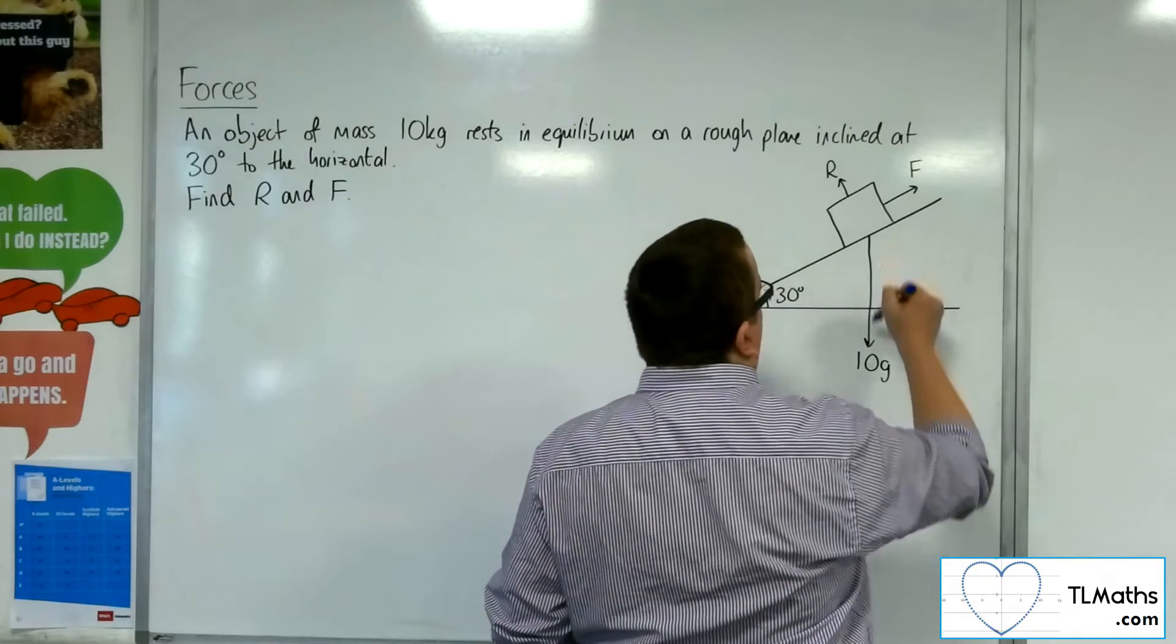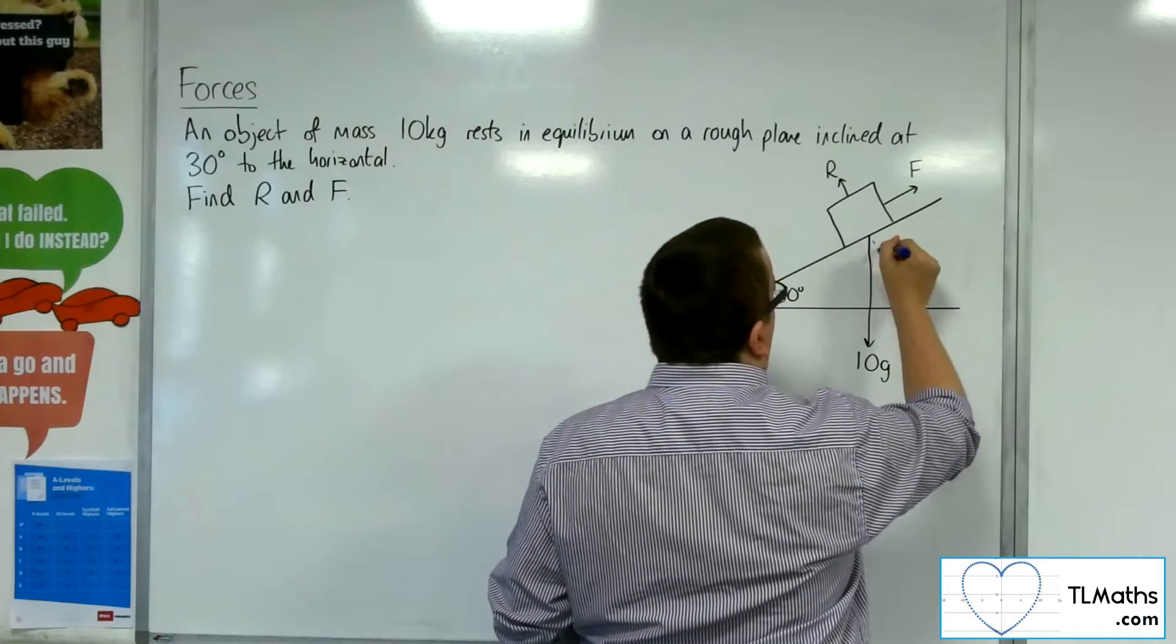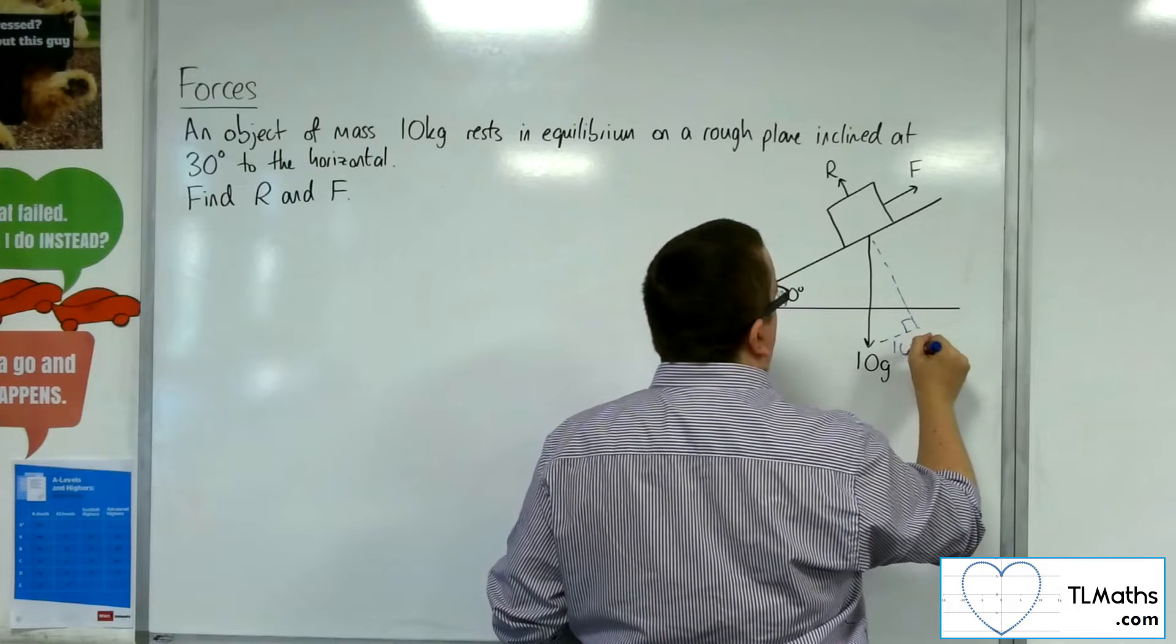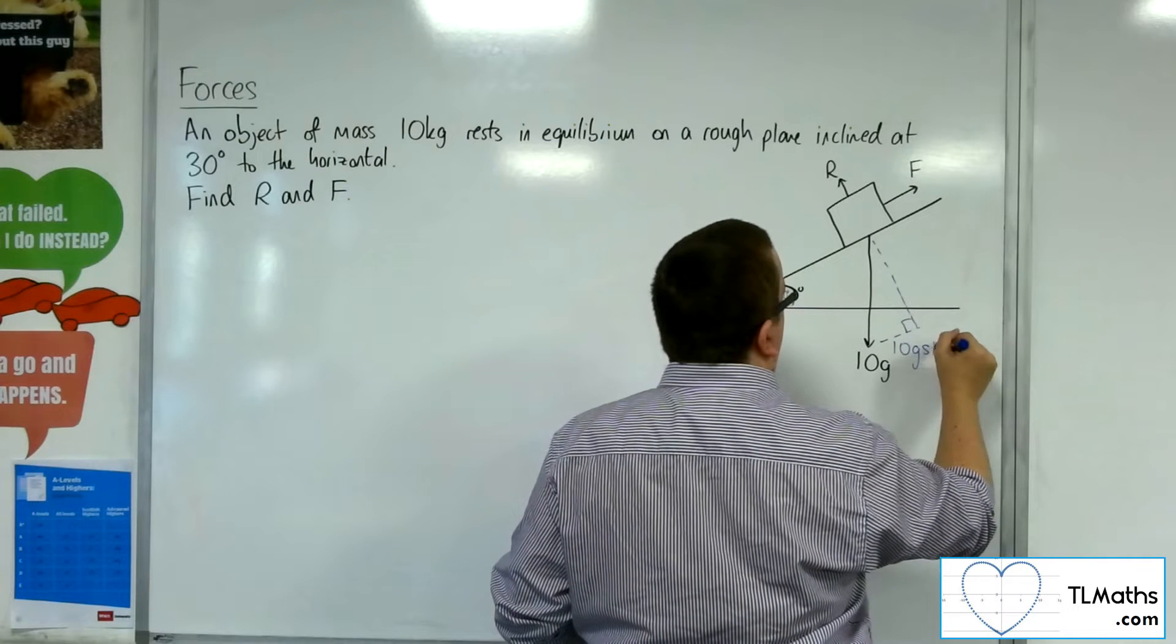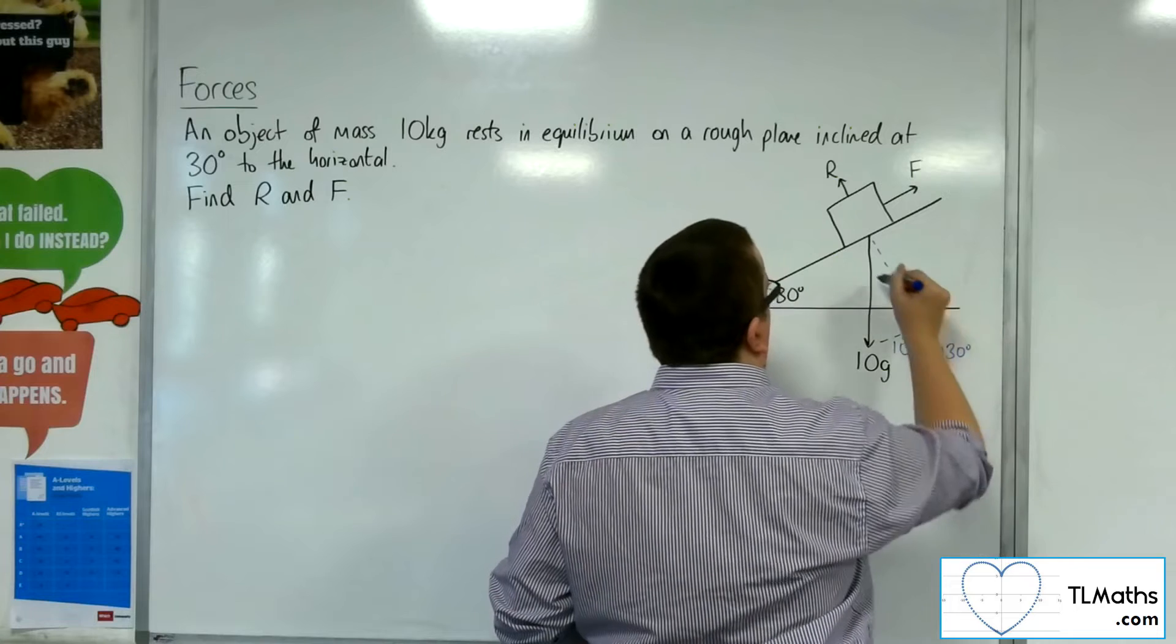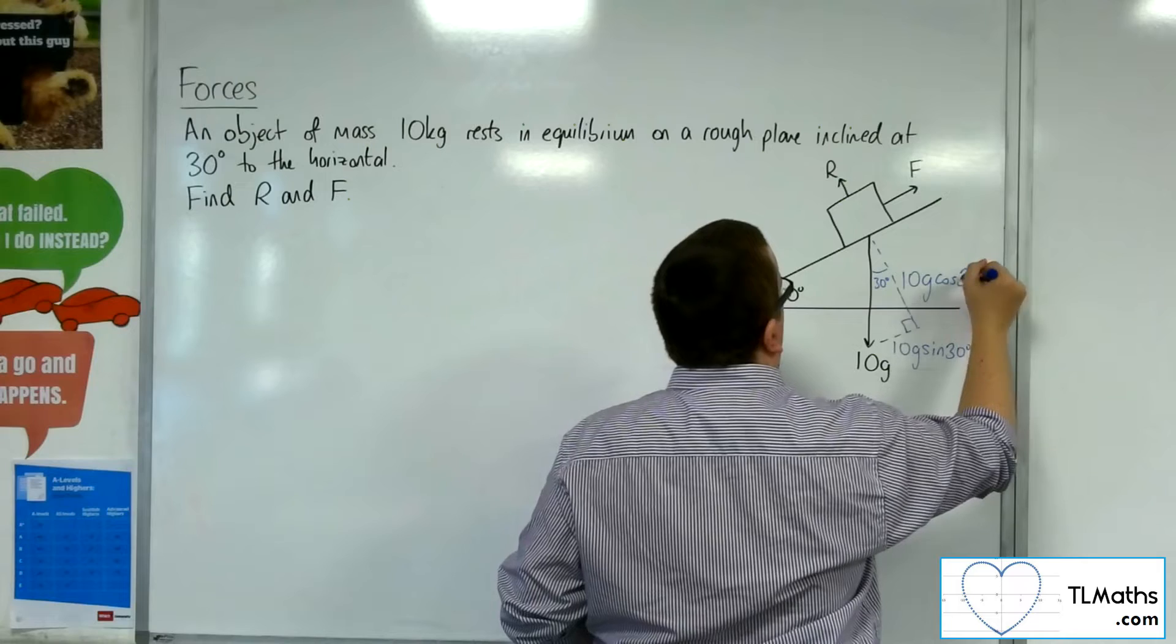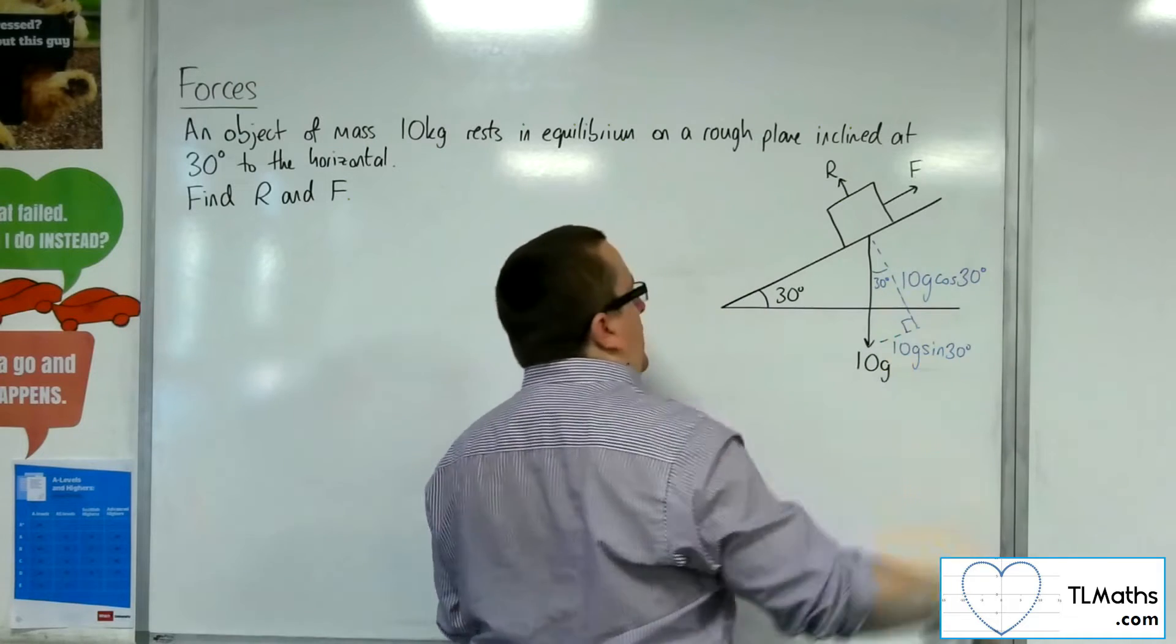So let's divide the weight up into its two component parts. We're going to have 10G sine 30. So remember that's 30 degrees. And we've got 10G cosine 30, opposite adjacent.